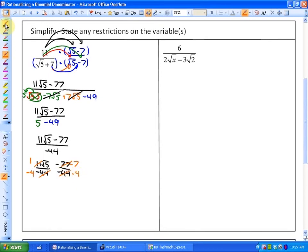So my simplest form will be, this here is root 5 minus 7 all over a common denominator of negative 4. That would be our simplest form.